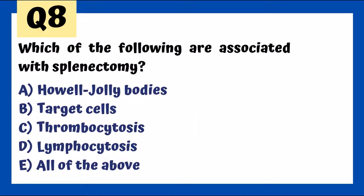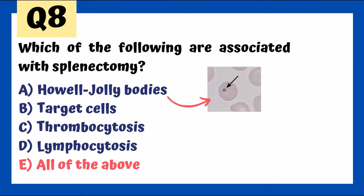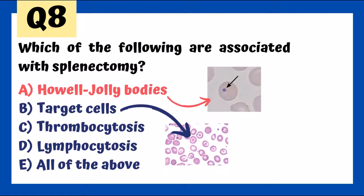Findings associated with splenectomy include Howell-Jolly bodies, target cells, thrombocytosis, lymphocytosis — all of the above. Howell-Jolly bodies are that little dot in the middle of weird-looking red blood cells. Normally the spleen is responsible for removing these abnormal red blood cells, but since we don't have a spleen, Howell-Jolly bodies and target cells will be seen.